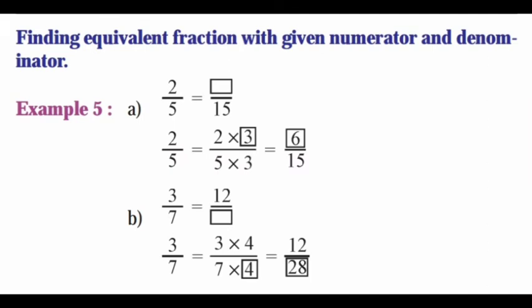Next, finding equivalent fractions with a given numerator and denominator. Example 5. A: 2/5 is equal to dash/15. Since 5 times 3 is 15, so 2 times 3 is 6. The answer is 6/15. B: 3/7 is equal to 12/dash. So 3 times 4 is 12, and 7 times 4 is 28. The denominator is 28.